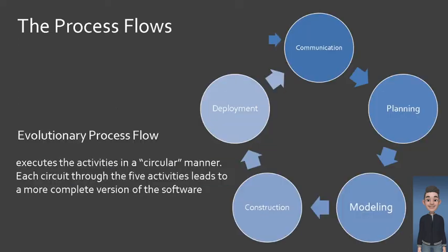We also have the evolutionary process flow, where each activity is executed in a circular manner. Each evolution of the five activities produces a working product, but a complete version of the software is produced after several evolutions. That is why it's called evolutionary, because it is circular.